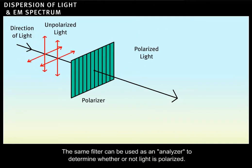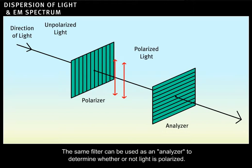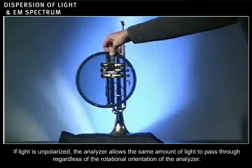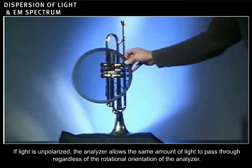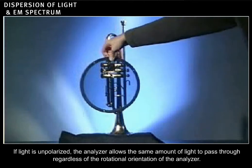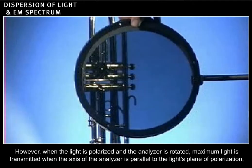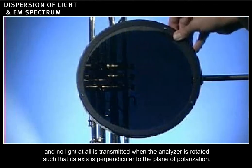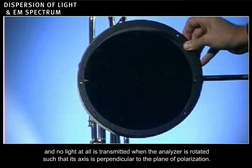The same filter can be used as an analyzer to determine whether or not light is polarized. If light is unpolarized, the analyzer allows the same amount of light to pass through regardless of the rotational orientation of the analyzer. However, when the light is polarized and the analyzer is rotated, maximum light is transmitted when the axis of the analyzer is parallel to the light's plane of polarization. And no light at all is transmitted when the analyzer is rotated such that its axis is perpendicular to the plane of polarization.